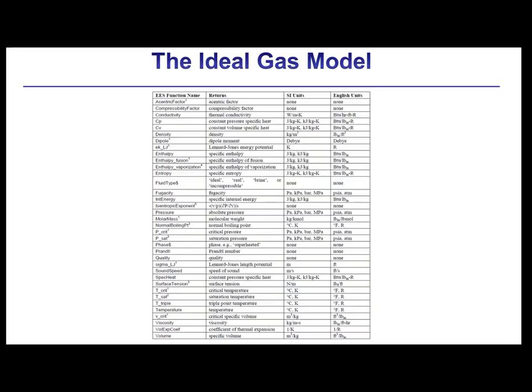All the property functions discussed previously for real fluids and shown in this table can also be used with the built-in ideal gases. Some of the property functions are not needed for ideal gases, but they will still work properly. For example, the compressibility factor of an ideal gas is always unity at any state, and its fugacity will always be equal to its pressure.